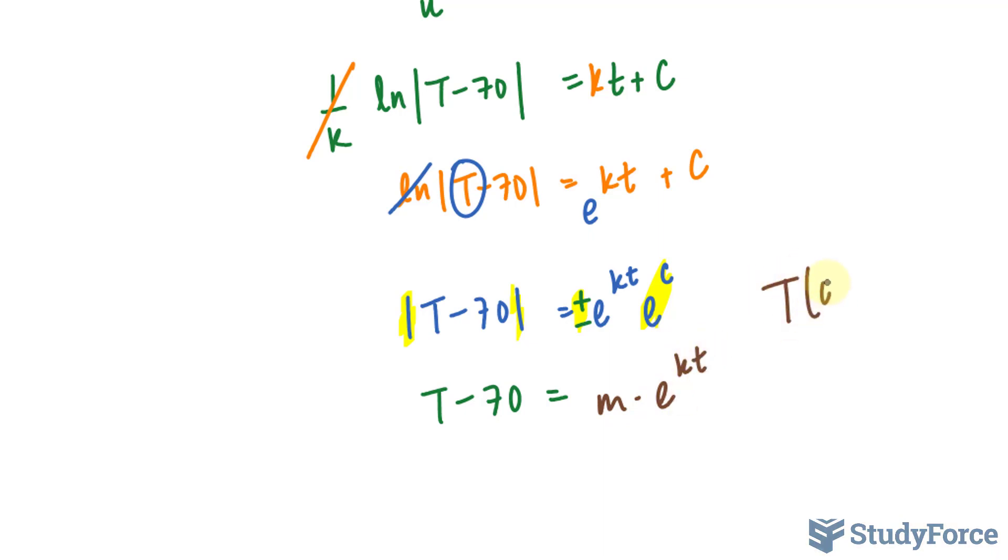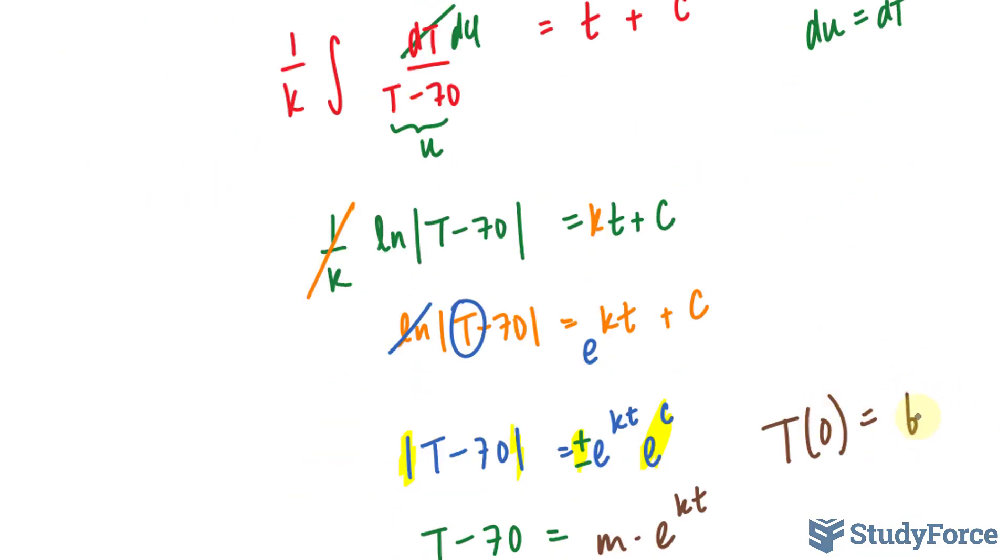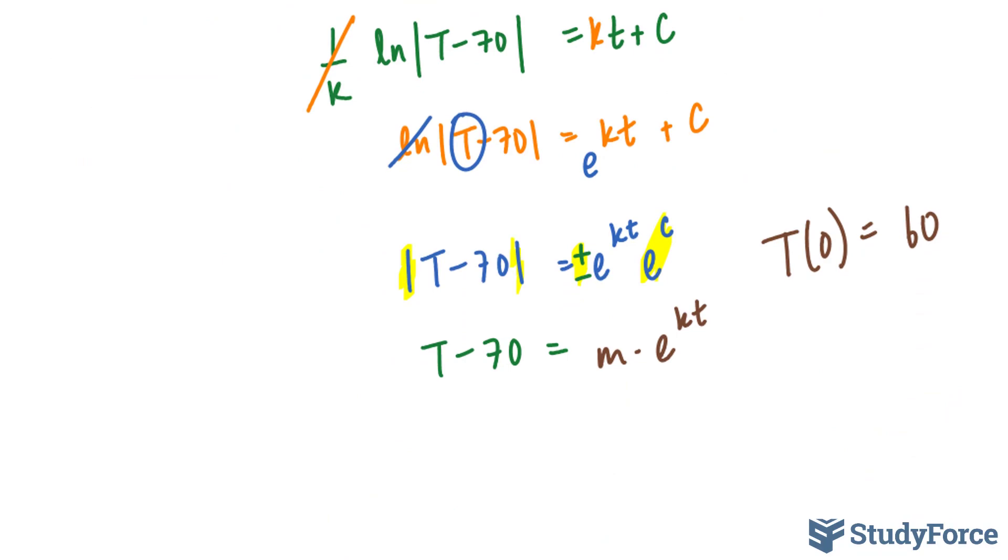Remember, at time 0, the question tells us that the martini was 60 degrees. And that's stated right here. So let's write that down. At time 0, the martini was 60 degrees. So what I'll do is replace this T with 60 and replace this little t with 0. That way I can find out what M is equal to. 60 minus 70 is equal to M times e^(k*0), which is e^0. And e^0 is equal to 1. Anything to the power of 0 is equal to 1. Therefore, M is equal to negative 10.